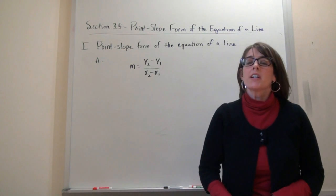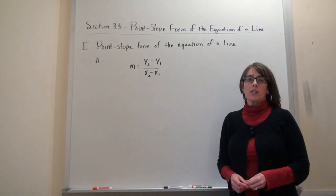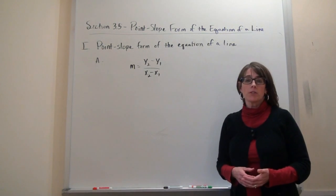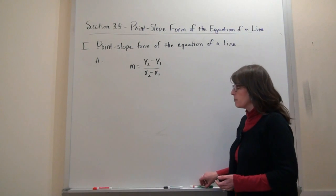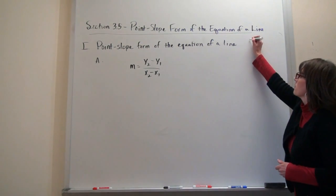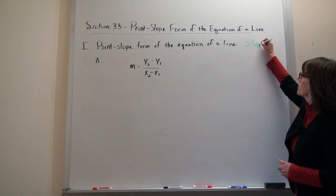We're going to take a look at the point-slope form of the equation of the line. We've already looked at a couple of different forms of the equation of the line, one of them being our slope-intercept form. Let's do a quick review of that.